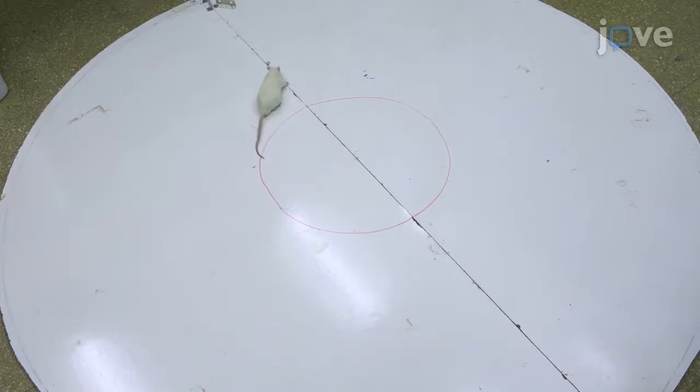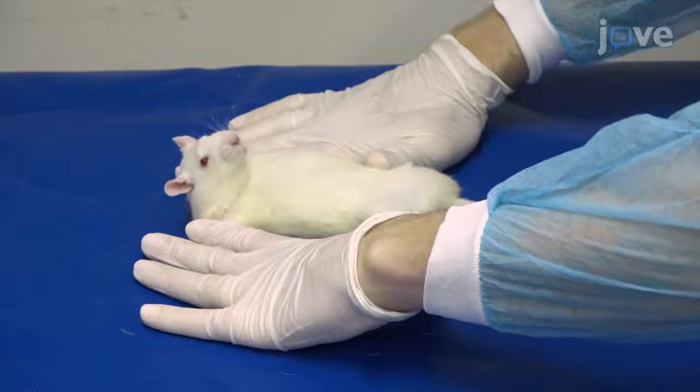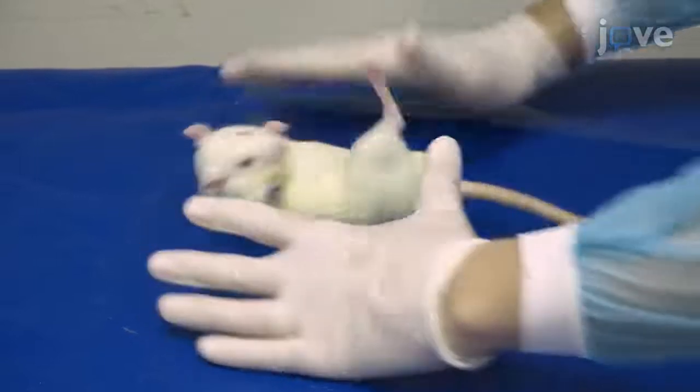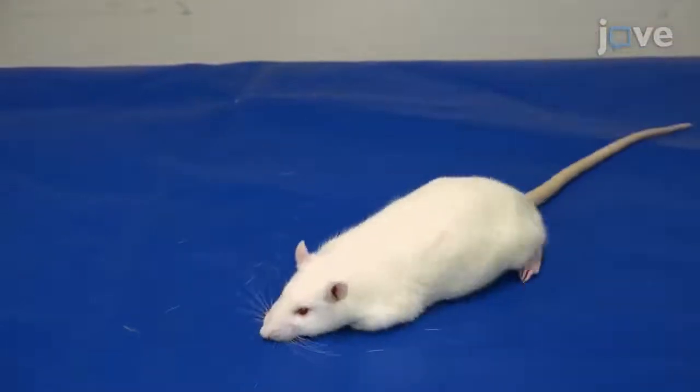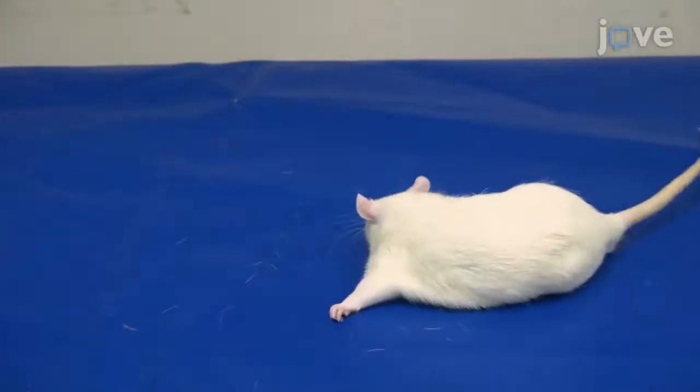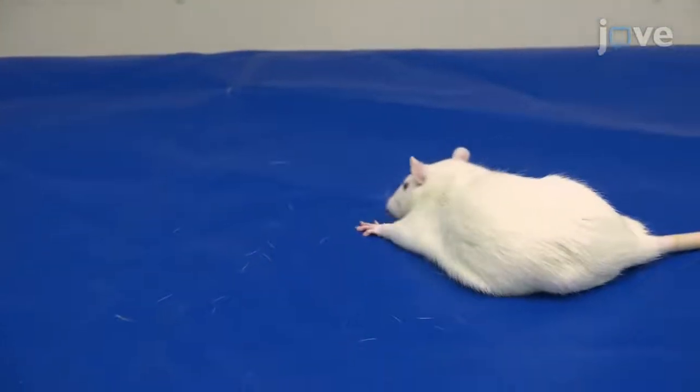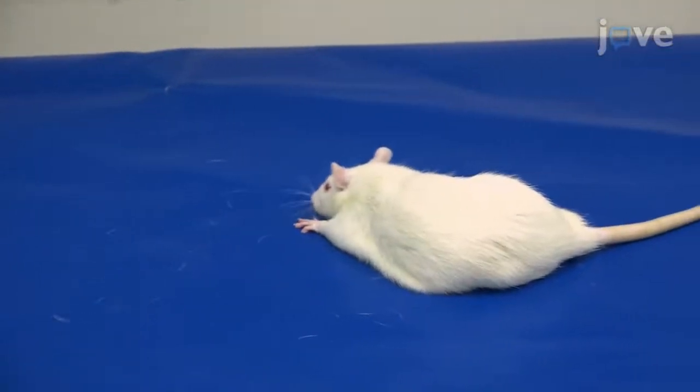To test for a loss of righting reflex, place the animal on its back in the palm of the hand and give a score of one if the rat is able to right itself.